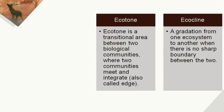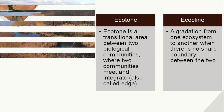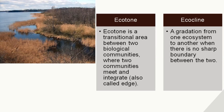There are two more concepts: ecotone and ecocline. An ecotone is a transitional area between two different communities where two communities meet and integrate, also known as an edge. For example, in this picture we can see the meeting point of an aquatic ecosystem and a terrestrial ecosystem — this particular meeting point is known as an edge.